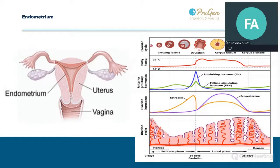The endometrium consists of two basic layers: the stratum basalis, which lies adjacent to the myometrium, and the stratum functionalis. The stratum functionalis is further divided into the stratum compactum, containing mostly stroma, and the stratum spongiosum, consisting mostly of glands and small amounts of stroma. The functionalis stratum is the most important part for embryo attachment, and endometrial proliferation, secretion, and degeneration all occur in this layer.